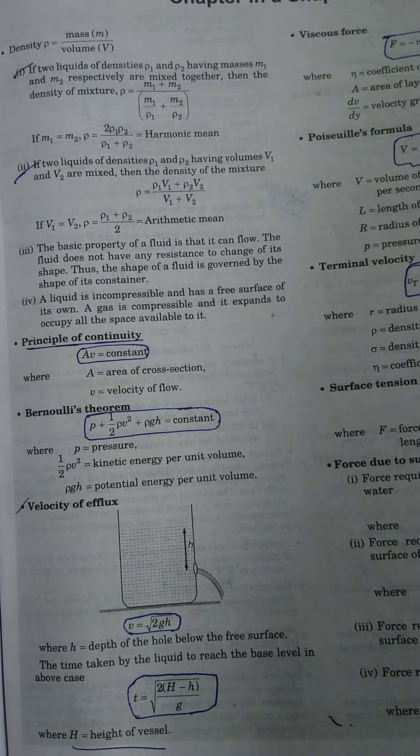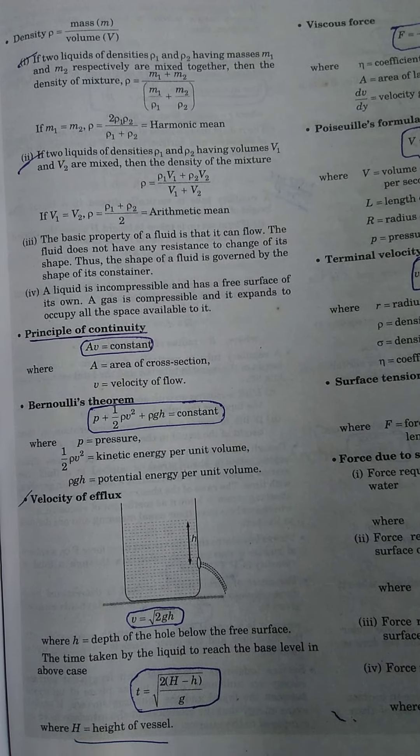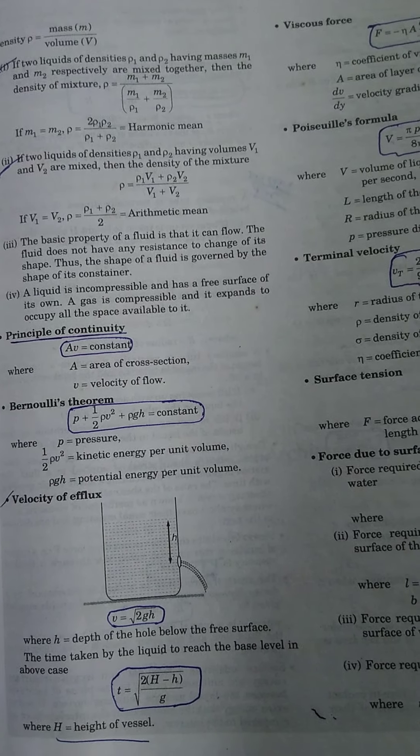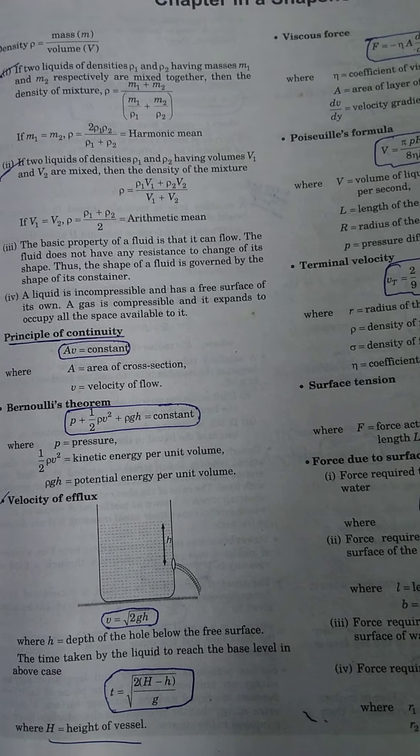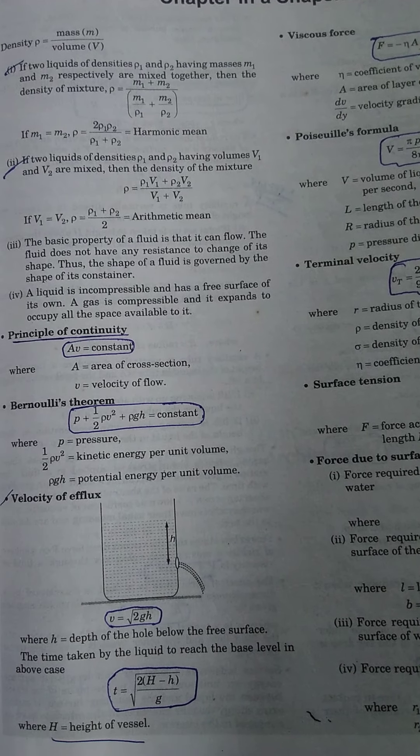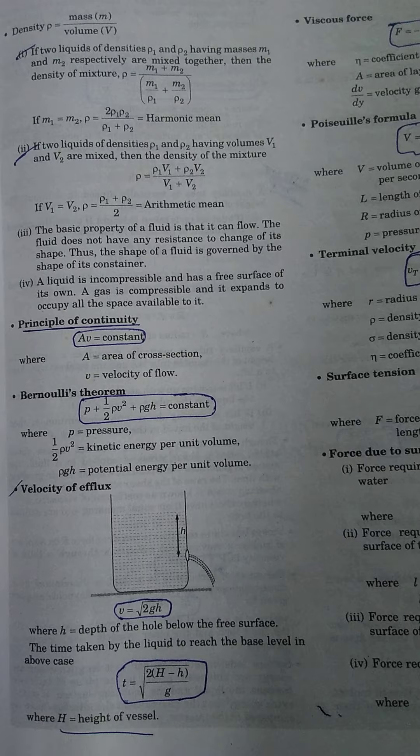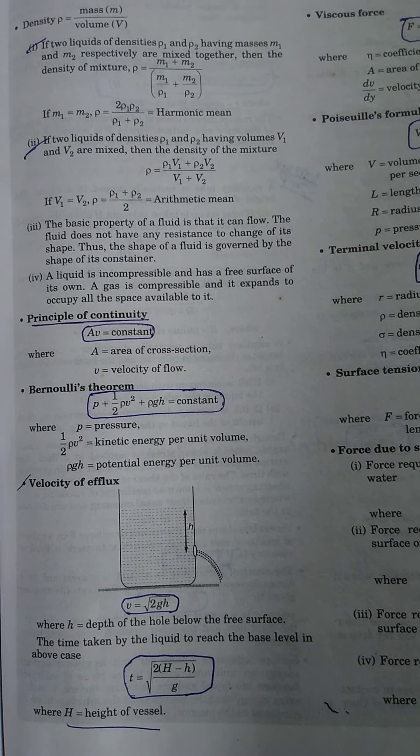Density of mixture ρ is equal to ρ1V1 plus ρ2V2 upon V1 plus V2. If V1 equals V2, then ρ is equal to ρ1 plus ρ2 upon 2, which is the arithmetic mean.